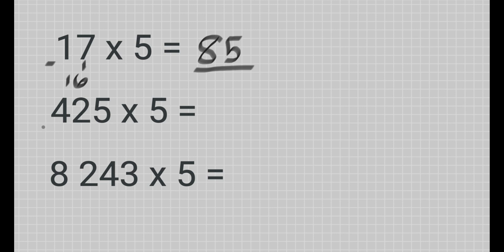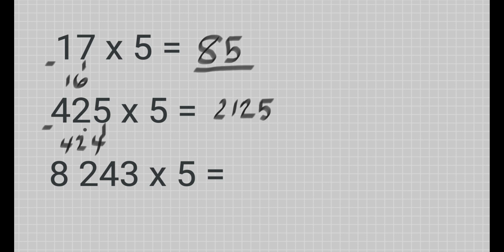Now let's have another example: 425 times 5. The first step is you need to subtract 1 from the multiplicand, so 425 minus 1 gives you 424. Now you need to get half of 424, which gives you 212. Then since 425 is an odd number, the last digit in the product will be 5, so therefore 425 times 5 is equal to 2125.